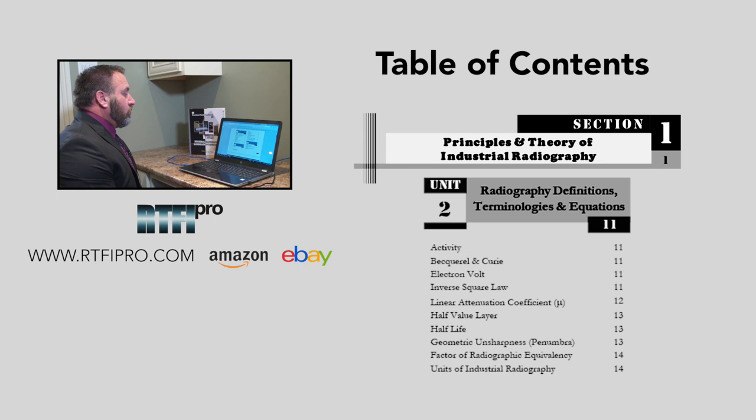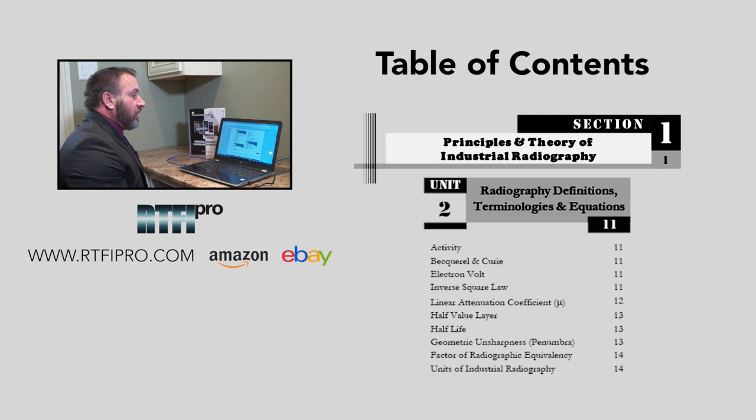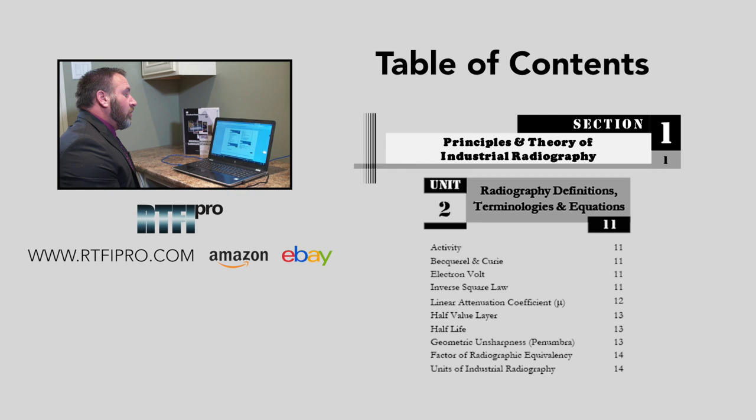Unit two covers radiographic definitions, terminologies, and equations — a lot of the equation parts. Topics include activity, Becquerel and Curie, electron volt, inverse square law, linear attenuation coefficient, half value layer, half life, geometric unsharpness and penumbra, factors of radiographic equivalency, and units of industrial radiography.